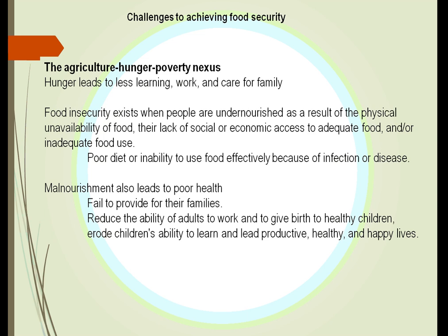Our challenge to achieve food security involves the whole combination of agriculture, hunger, and poverty. Hunger leads to less learning, less work, and less care for the family. People become undernourished — they don't have food, so they become too weak to even take care of the food. The poor diet leads to more diseases and infection. Malnourishment leads to increased diabetes, increased congestive heart failure, and babies that are less healthy because the mother cannot eat well.